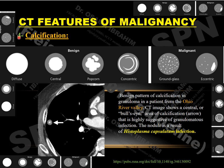The fourth CT feature is calcification. Diffuse, central, popcorn (as in hamartoma), and concentric or laminated (alternating layers) calcifications are benign patterns, representing granulomas or degranulomas. However, if calcification is presented in a ground glass opacity pattern or eccentric pattern, this raises the possibility of malignancy. A patient from the Ohio River Valley with central calcifications was diagnosed with Histoplasma capsulatum infection.